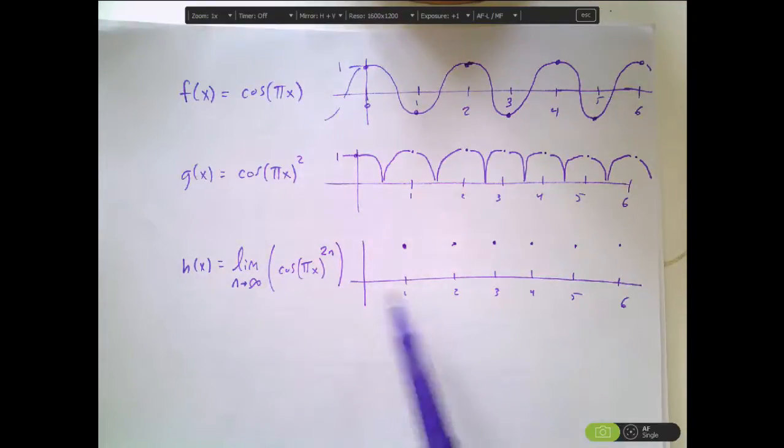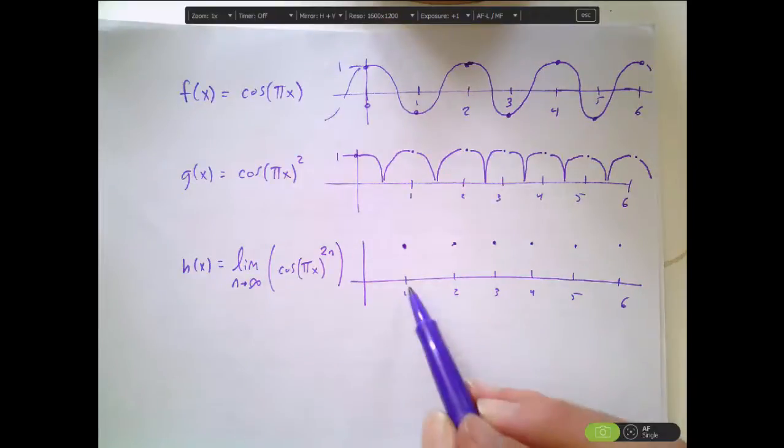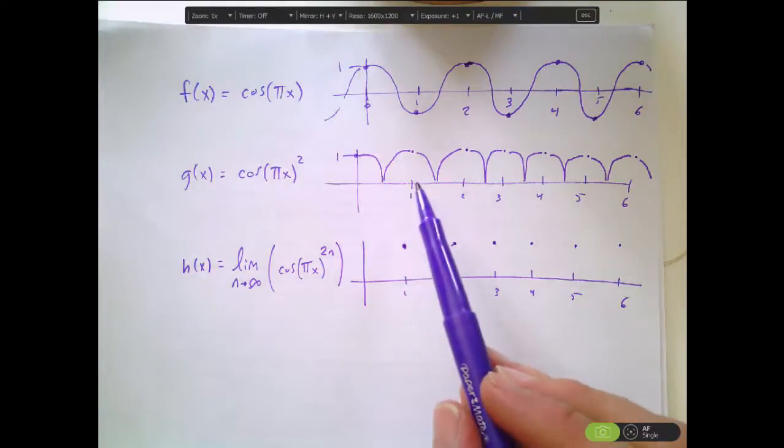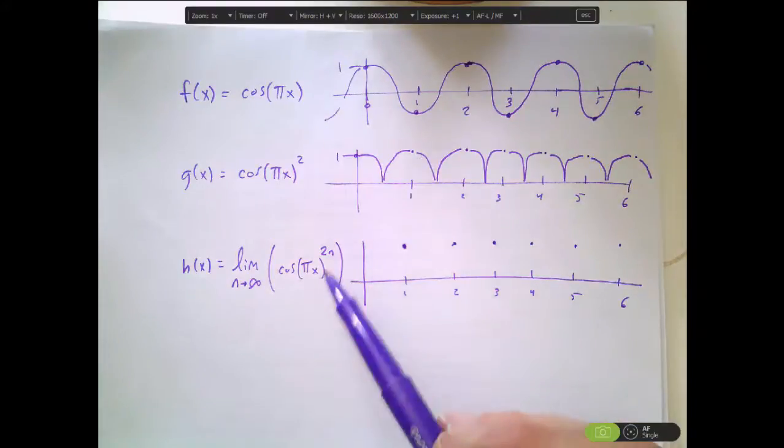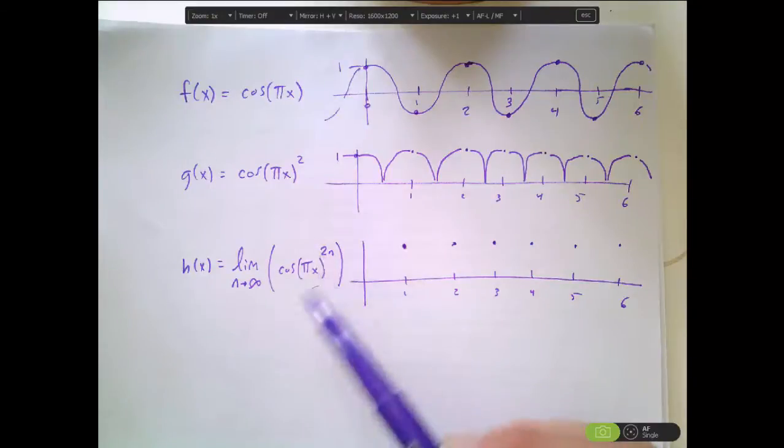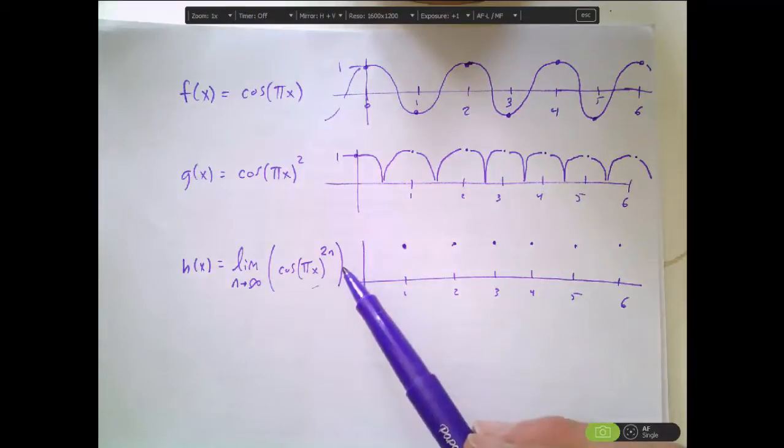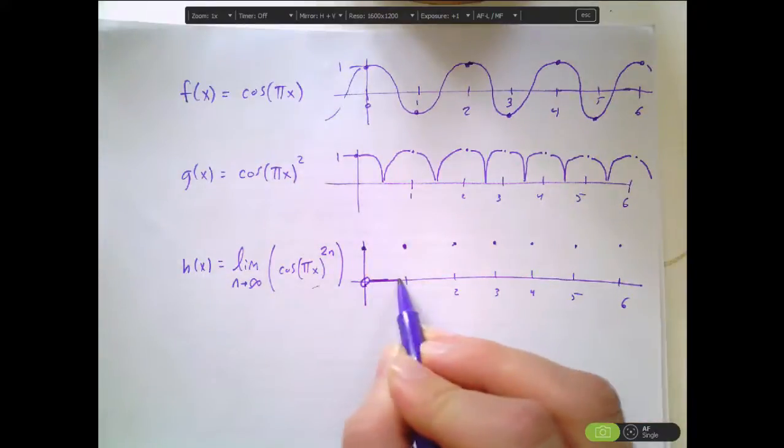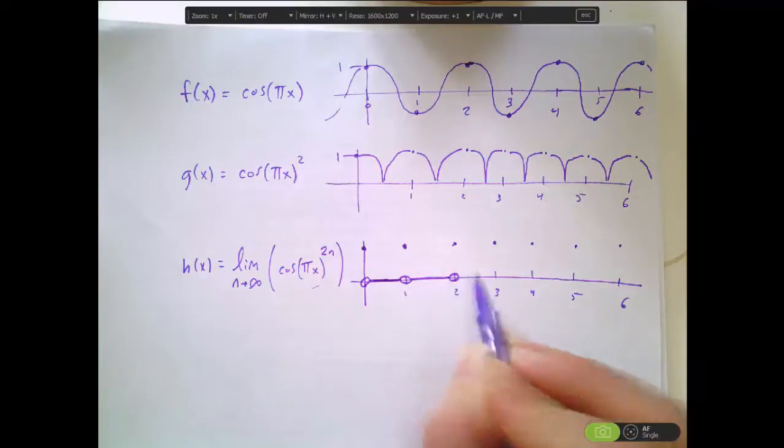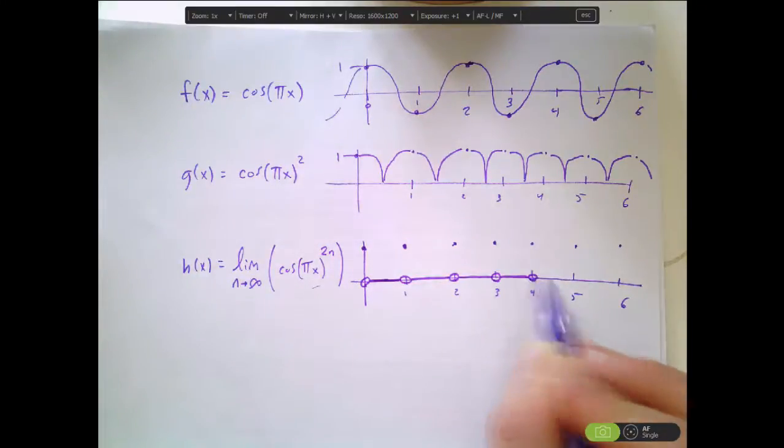What's happening at all of the other x values here? Even if I move over just a tiny, tiny, tiny bit in my original graph, I'll have a value that is slightly less than 1. Well, if I have an x value so that this cosine squared is slightly less than 1, if I'm going to raise a value that's slightly less than 1 to higher and higher powers, they're going to get smaller and smaller. So eventually, the limit is going to approach 0. What that means is that at every single other point, we have the output of this function as being 0.